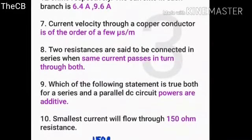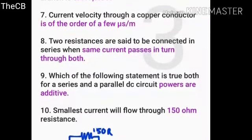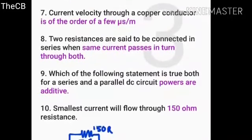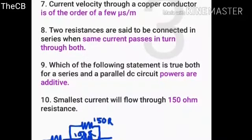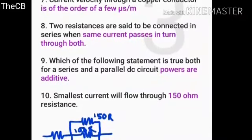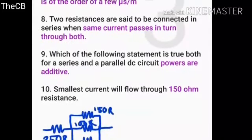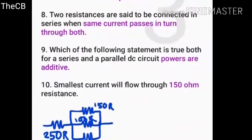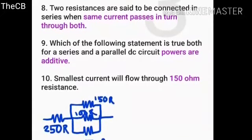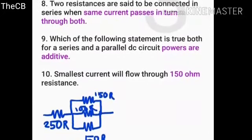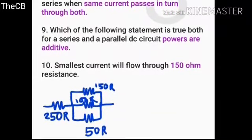Two resistances are said to be connected in series when the same current passes through both. Regarding which property is true for both series and parallel DC circuits: it is power, not current or voltage. A small current flows through a 150 ohm resistance.